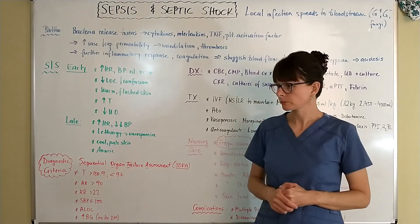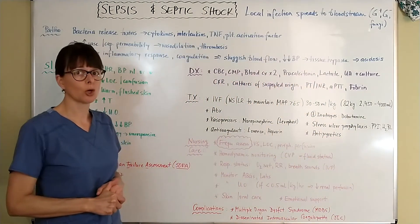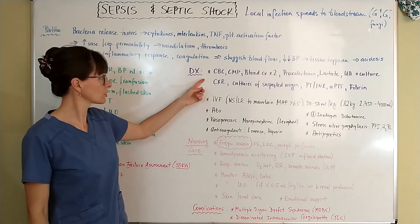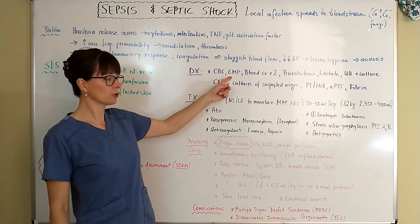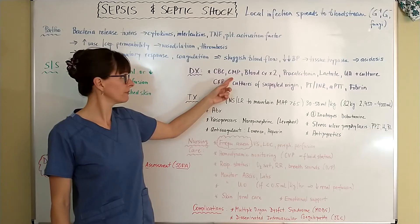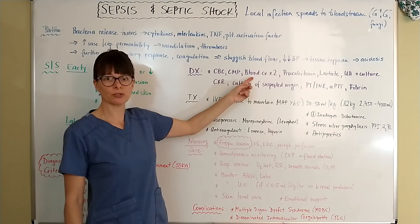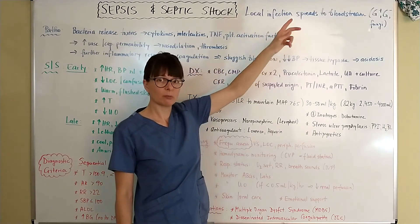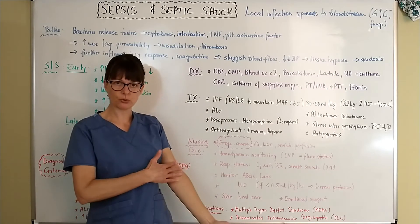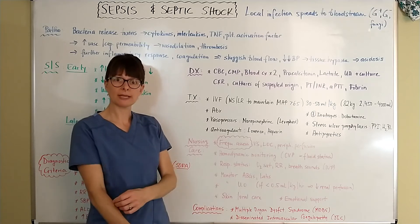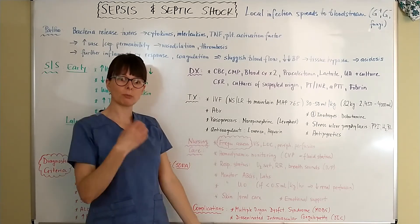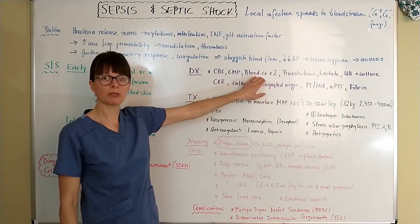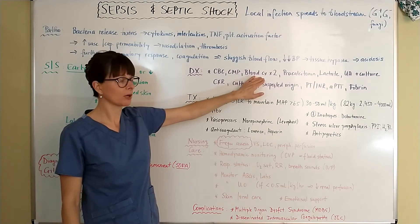Diagnostic tests for a patient who is septic or developing septic shock include a complete blood count (to look at platelets), a CMP to check electrolytes as well as kidney and liver function. We need blood cultures times two — because the local infection has spread into the bloodstream, we collect two different blood samples usually from the upper extremities, hoping to catch the offending organism and grow it from the blood culture. Always remember that blood cultures must be collected before any antibiotics are given, if at all possible.